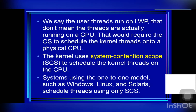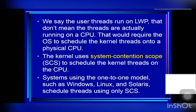The scheduler selects the runnable thread with the highest priority to run. User-level thread priorities are assigned by the programmer and are not adjusted by the thread library, although some thread libraries may allow the programmer to change the priority of a thread. It is important to know that process contention scope will typically preempt the thread currently running in favor of a higher priority thread. However, there is no guarantee of time slicing among threads of equal priority.